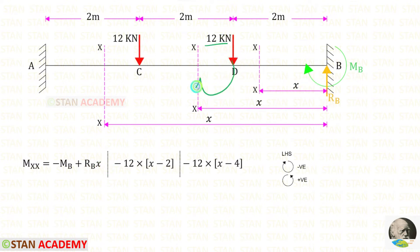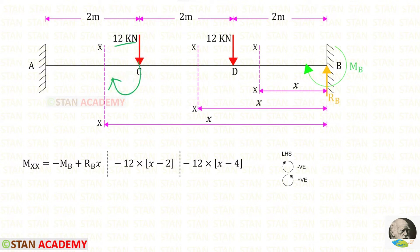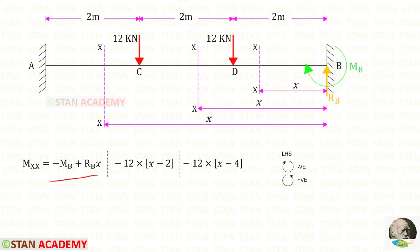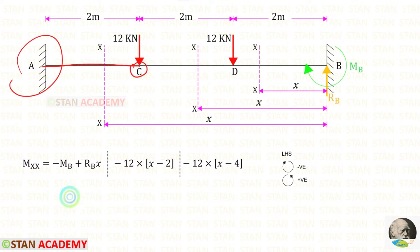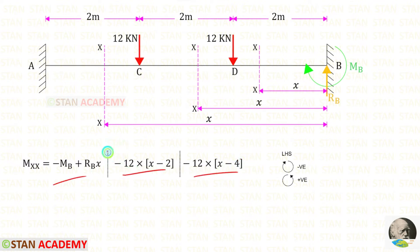This point load is acting in the clockwise direction so it will be negative. For this load we take the distance X minus 2. This load is also acting in the clockwise direction so it will be negative, and for this load the distance is X minus 4. This term is only applicable from point B up to point D. From point D up to point C we consider both of these terms. From point C up to point A we take all of the terms. These three terms should be separated by the dotted line.